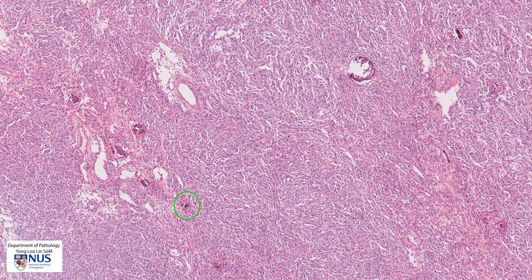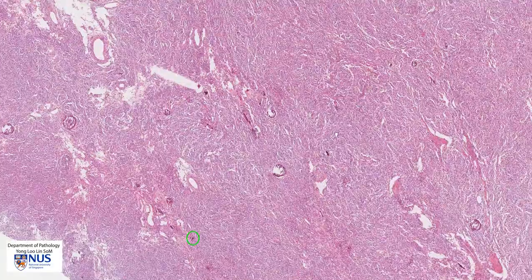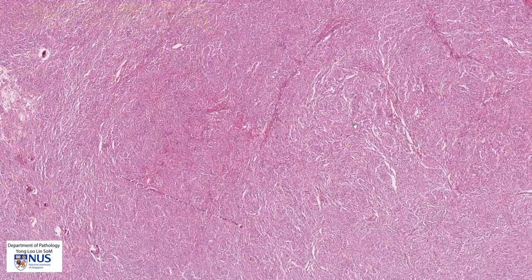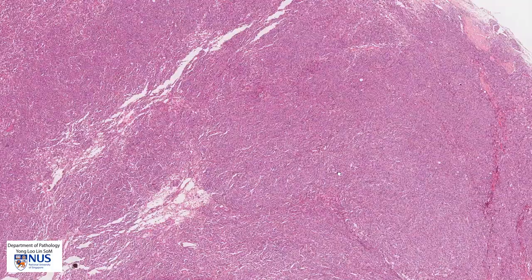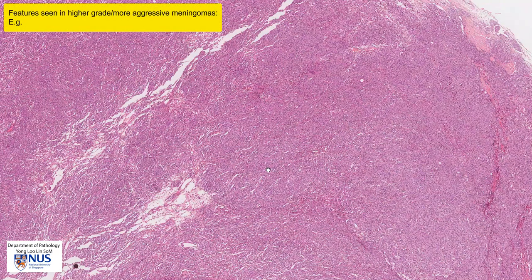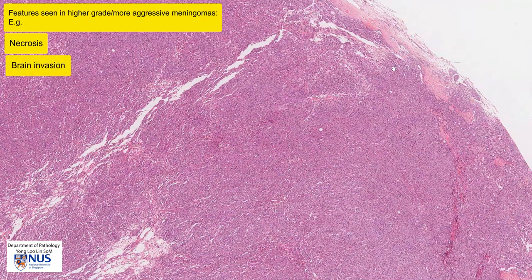This is an example of a meningothelial meningioma. This particular tumor is usually a low-grade tumor, and we use the World Health Organization WHO grading system — it's usually grade 1. There are some features that would make us worry about a higher grade, and these always have to be looked for in meningiomas, including things like the presence of tumor necrosis, invasion into the brain if there is any brain tissue also excised, and the presence of increased mitotic figures.